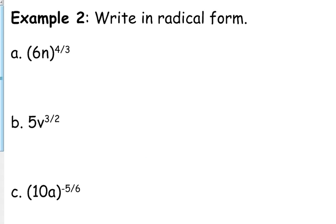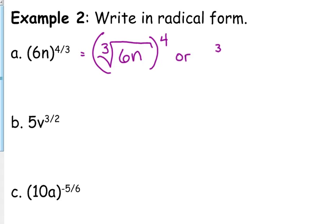So 6N to the 4 thirds — 6N is in parentheses — so this is the cube root of 6N to the 4th. You could write it like that, or you can write it as the cube root of 6N in parentheses with the 4th under the radical. Those mean the same thing. It doesn't matter whether you apply the root first or the exponent first — you should get the same answer. Those are equivalent forms.